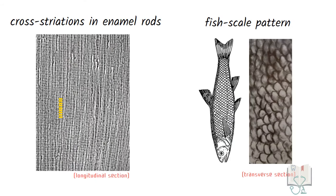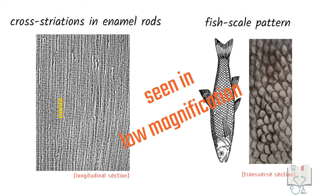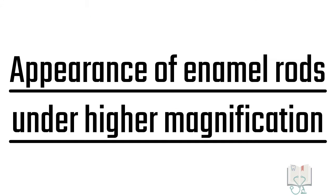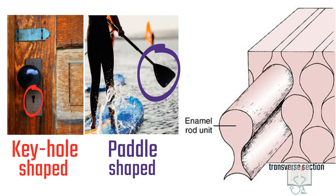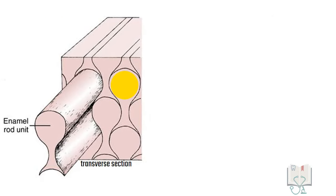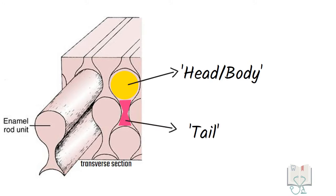All these features are seen under light microscope. But further study of enamel rods can only be done under higher magnification. Under higher magnification, in transverse section, the enamel rods give a keyhole shape or paddle shape pattern. The wide part is called the head or body of the enamel rod and narrow part is the tail of the enamel rod.